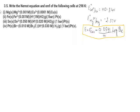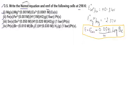Hello everyone, I am back again with the electrochemistry NCERT solution. We are on Question number 3.5. This question is all about writing the Nernst equation and EMF of the following cell at 298 Kelvin. There are 4 cells given and you need to solve all 4 cells one by one.